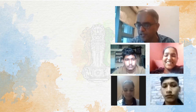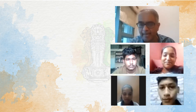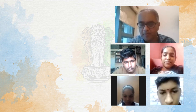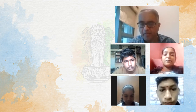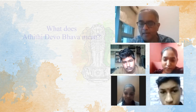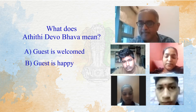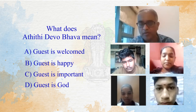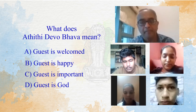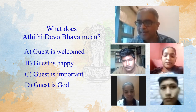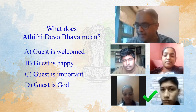The fifth question goes to team Swaraj, Twinkle and Sahil. What you're seeing is an Incredible India campaign, part of tourism promotion for India. The question: Atithi Devo Bhava — what does it mean? Is it 'the guest is welcomed', 'guest is happy', 'guest is important', or 'guest is God'? Twinkle answered: guest is God. You guys get 10 points.